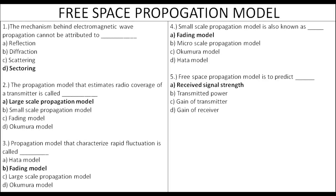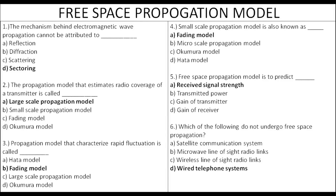If you use the free space propagation model and look at the received signal strength, the free space propagation model applies to unobstructed line of sight paths: satellite communication, microwave line of sight, and wireless line of sight.